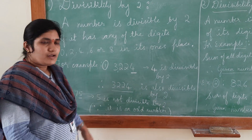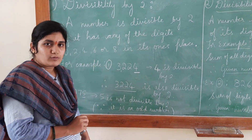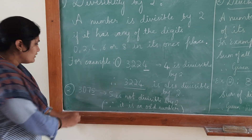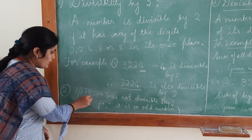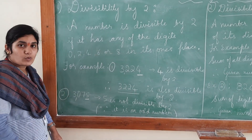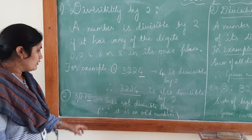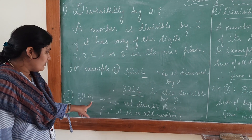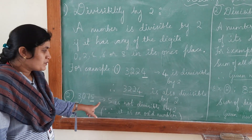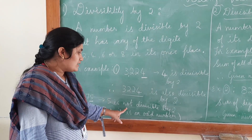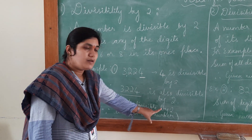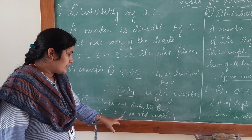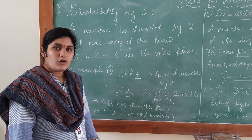Now let us move on to one more example: 3,075. Let me check the ones place number. The ones place here is 5. 5 is not divisible by 2 because it is an odd number.